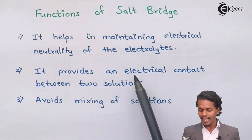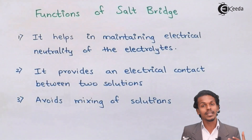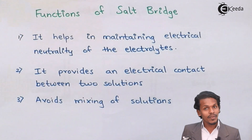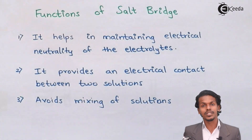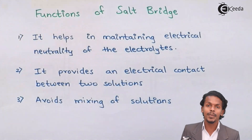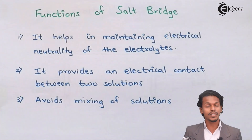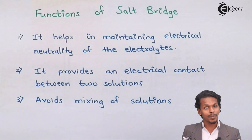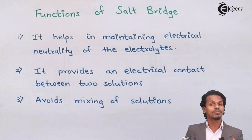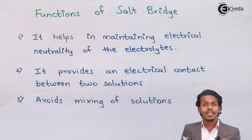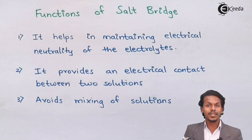The next function is that it provides electrical contact between two solutions. When two half cells are present and we want to calculate the EMF or current generated, the salt bridge connects them. If instead we used a semi-permeable membrane or an apparatus allowing mixing of the two solutions, this would create a deflection in the EMF of the cell, and we would not get an adequate current reading. Therefore, a salt bridge is maintained between the two half cells.